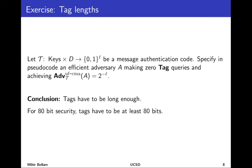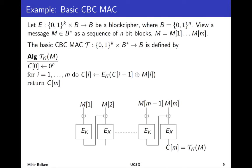Now we have a definition and can think about building tagging functions that achieve it. One key insight: if tags are too short, there's no security. When tags are l bits long, an adversary has a success probability of 1/2^l, which is far too high when l is small (e.g., l=2 gives a one-in-four forgery chance). So tags should be long — at least 80 bits; in practice, most MACs use even longer tags.